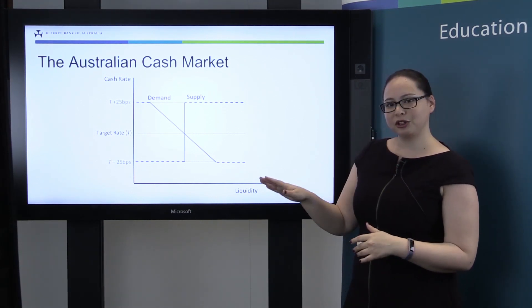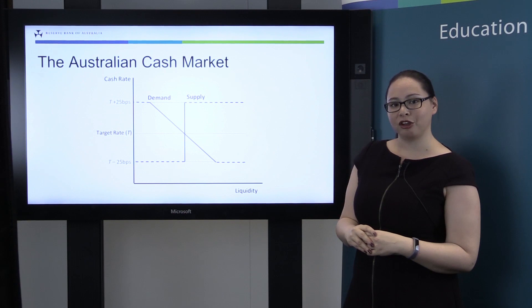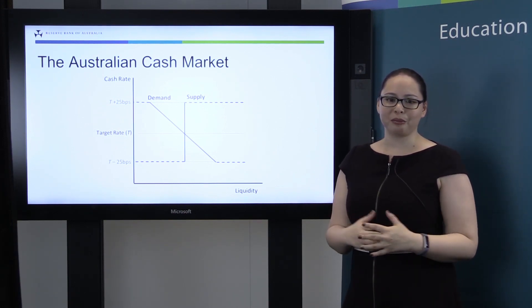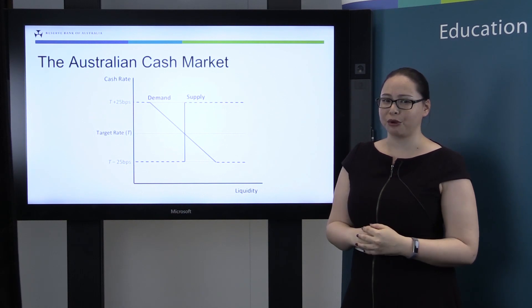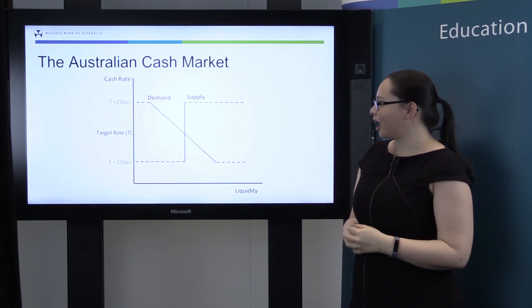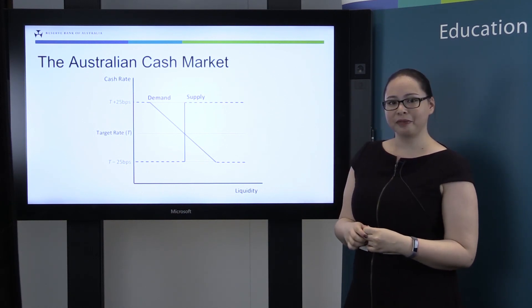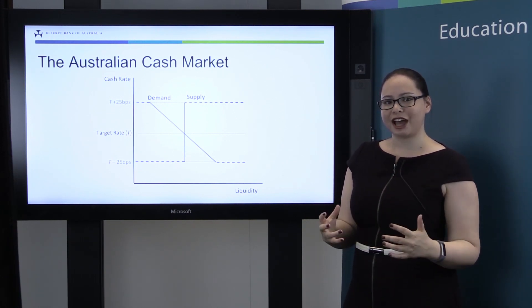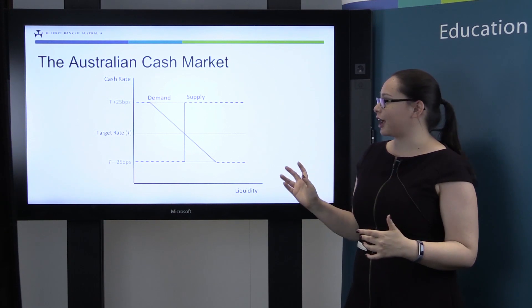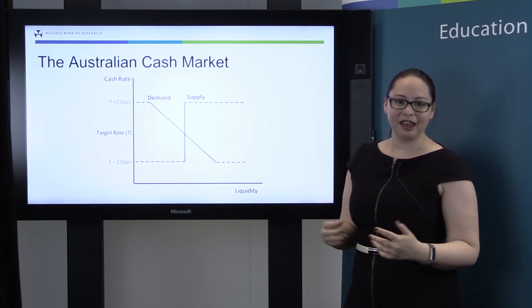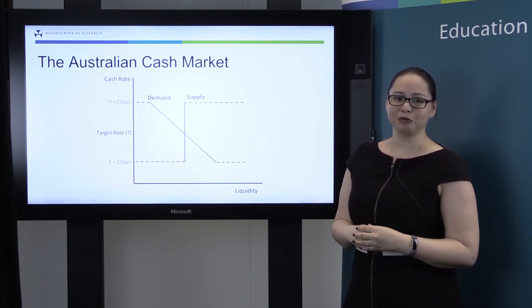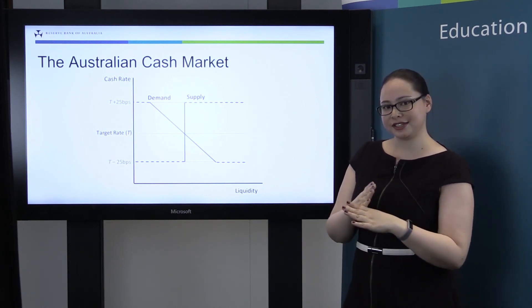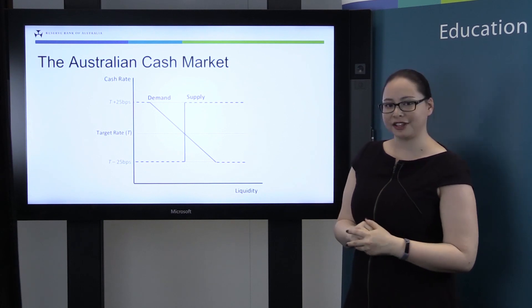I've also included a standard downward sloping demand curve here. We don't directly observe demand, but we interact with the market every day, so we get a pretty good gauge of what demand is. And finally we have the supply curve, and this is really the domain of the Domestic Markets Department. It's our job to ensure that the supply of cash is appropriate to meet demand and keep the cash rate close to target — in other words, to make sure the supply curve intersects the demand curve close to that target rate.